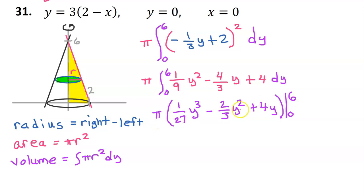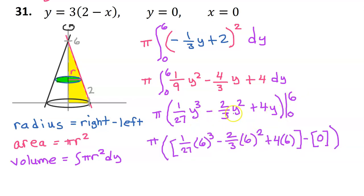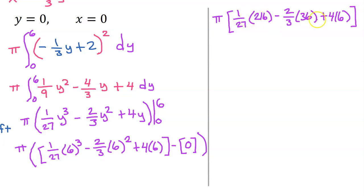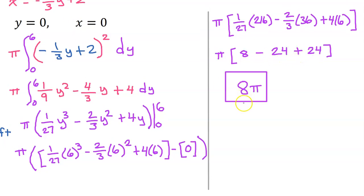Applying the exponents and performing the multiplication: the negative twenty-four and positive twenty-four cancel each other out. So the final answer is 8 pi. This is the volume of the solid of revolution.